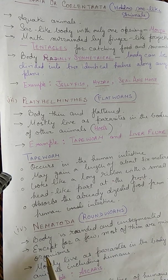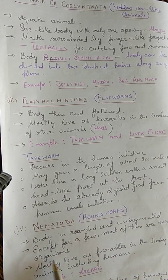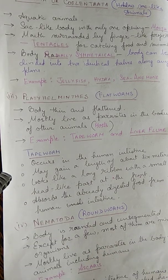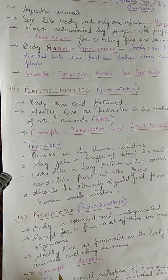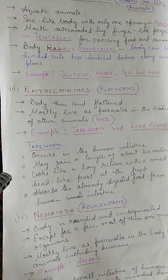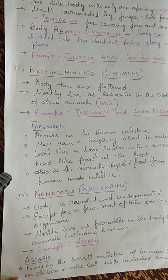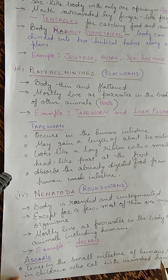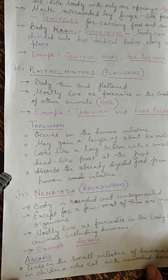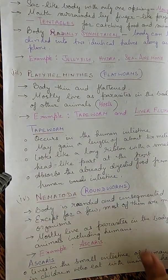The fourth phylum is Nematoda, meaning roundworms. Their body is rounded and unsegmented. Most of them are minute organisms and live as parasites in human and other animal bodies. For example, Ascaris lives in the small intestine of humans, commonly in children who eat with unwashed hands or consume unwashed fruits or vegetables.